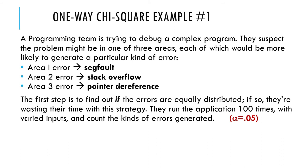The first step is to find out if the errors are equally distributed. If they're equally distributed, then this strategy doesn't work because it won't point them to any particular error. So they run the application 100 times with varied inputs, and then they count the kind of errors that get generated. Now they're going to do a hypothesis test to see whether the pattern of errors deviates from equal distribution. This is a fairly common thing to do with goodness-of-fit tests, with chi-square goodness-of-fit.